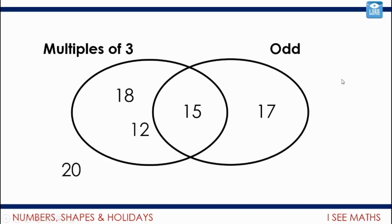For example, there's some numbers I've put in. Fifteen, of course, is a multiple of three and it's odd. Seventeen is only odd, so it does belong in this oval but not in the other one. Here we've got multiples of three, but they're not odd. Of course, twenty goes on the outside because it is neither a multiple of three nor is it odd.